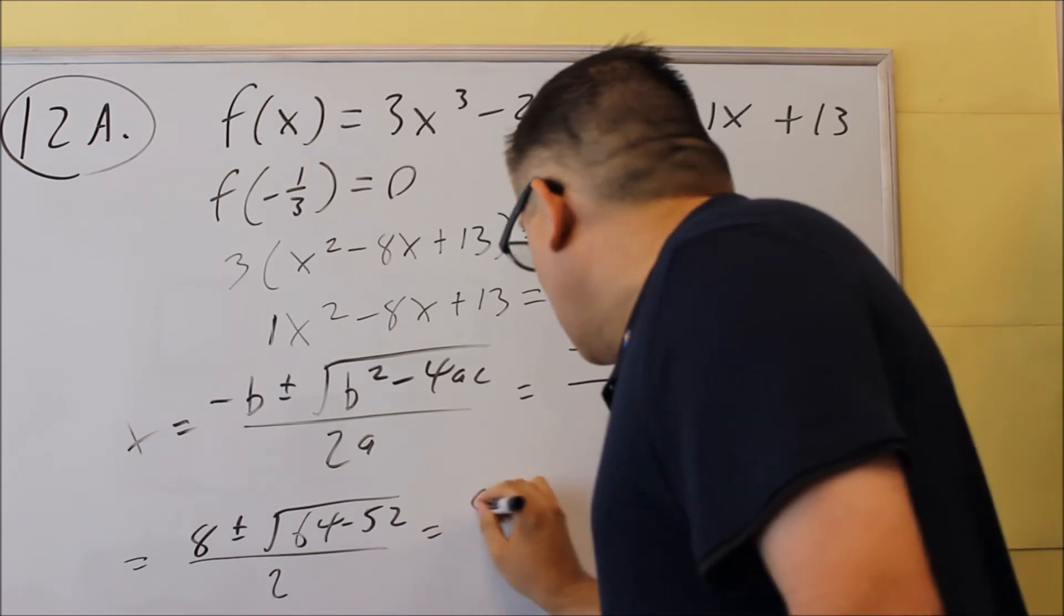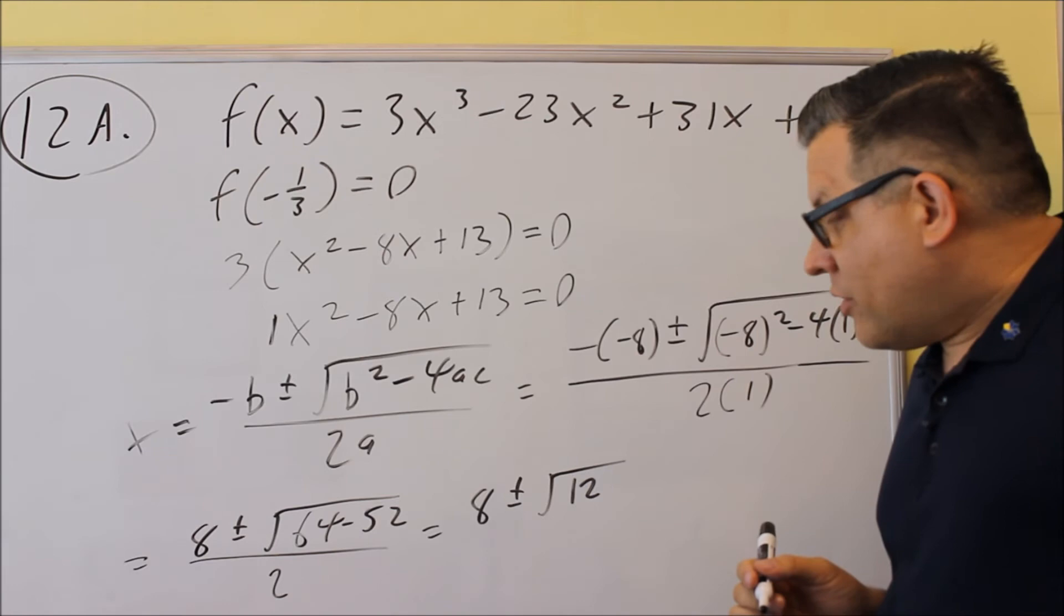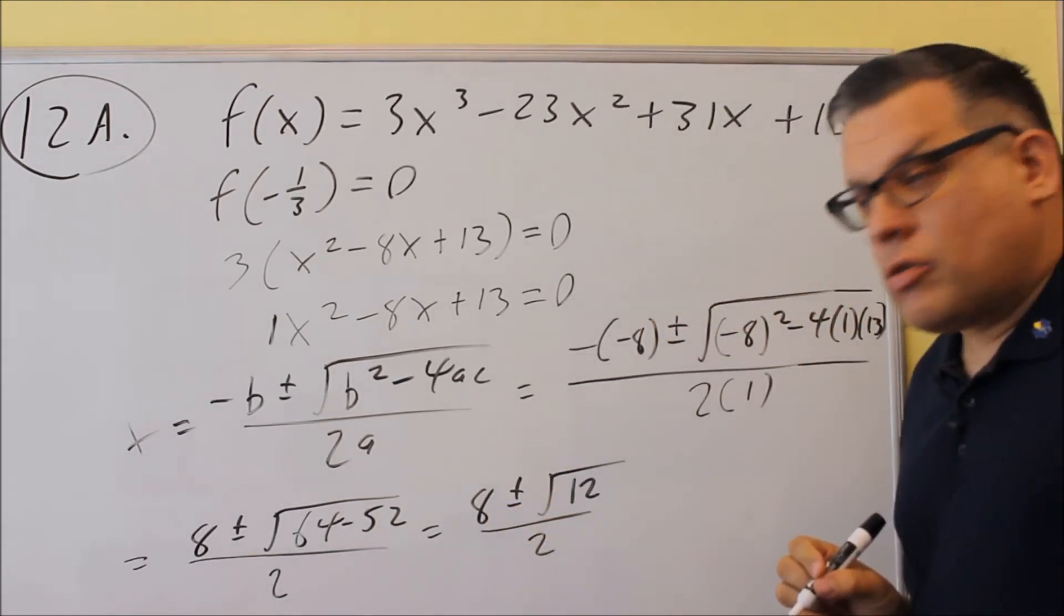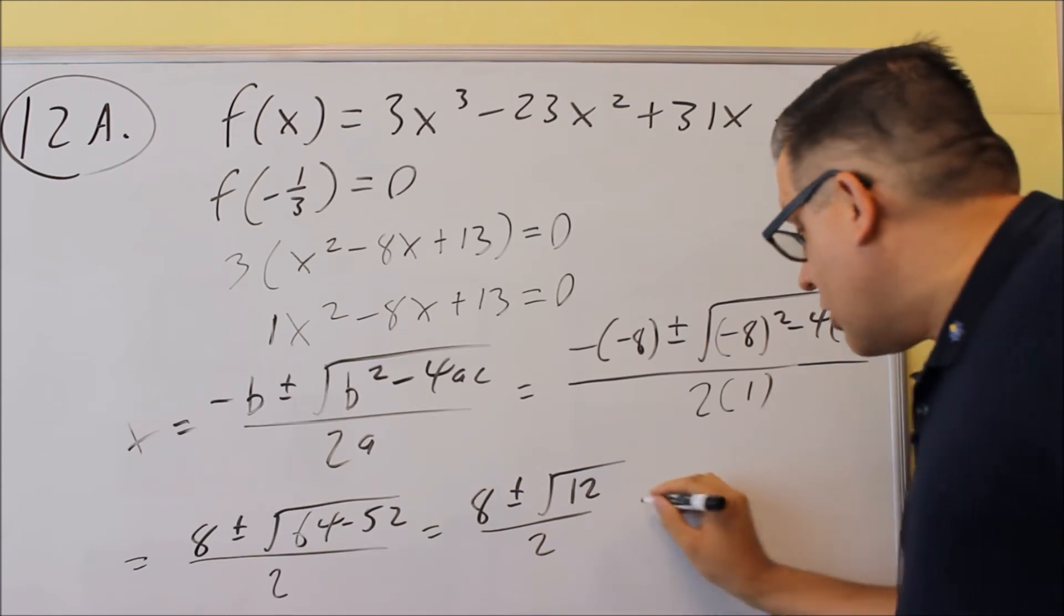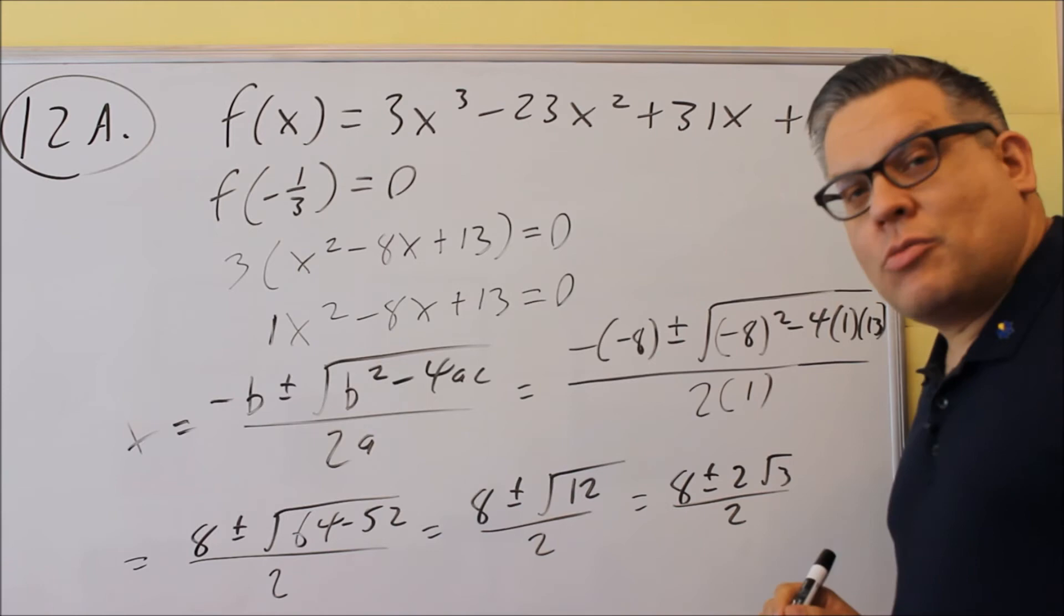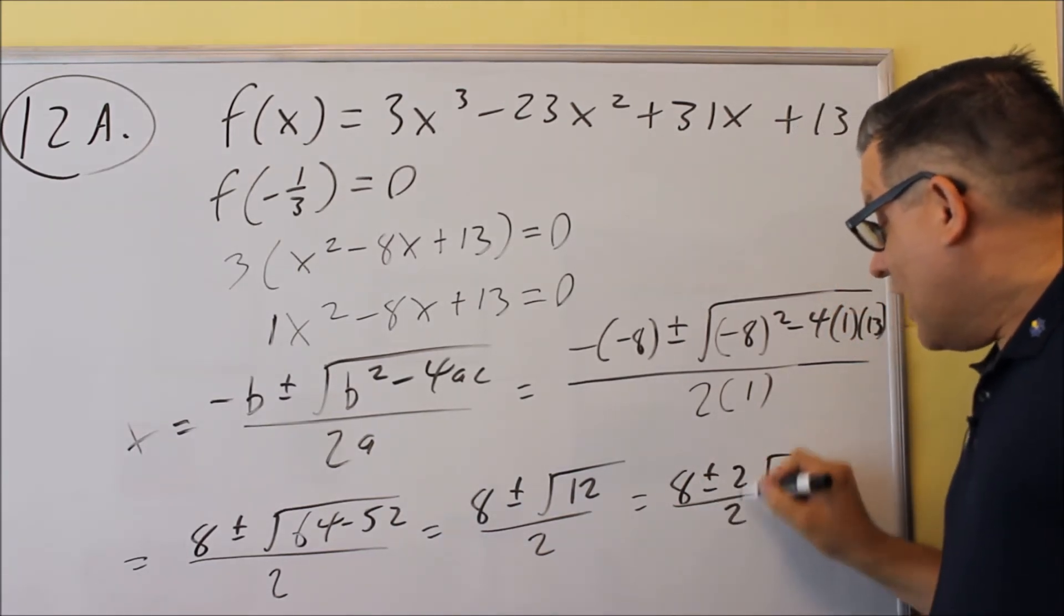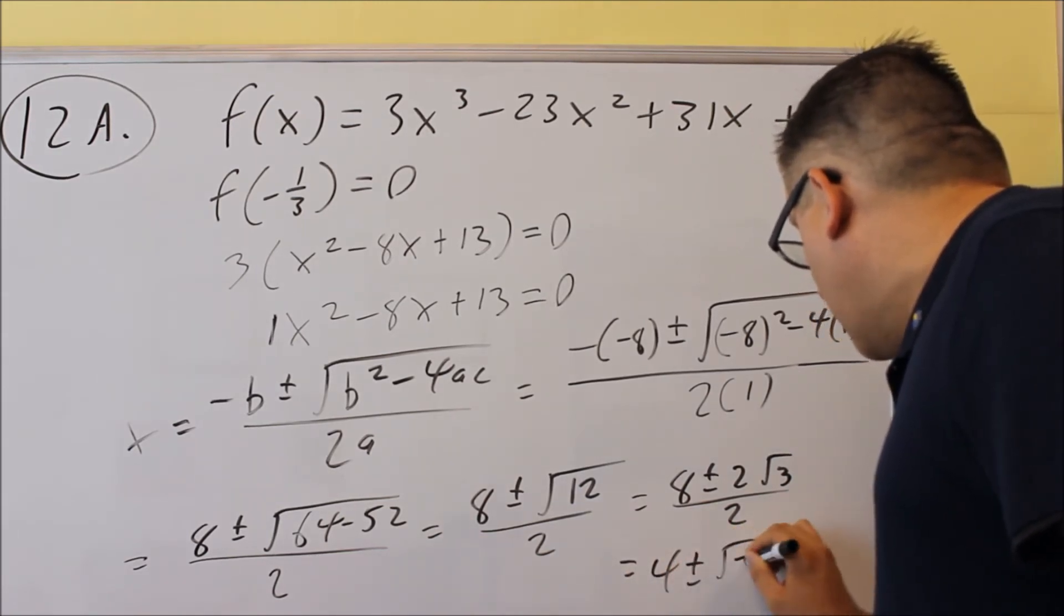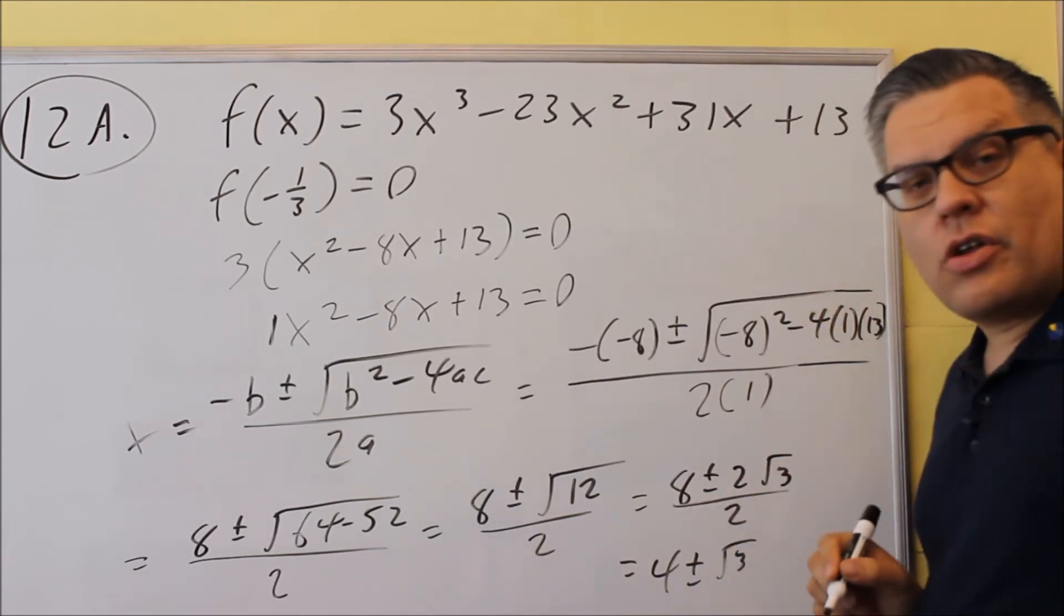You want to subtract this, you get 8 plus or minus the square root, you'll get 12 inside there when you subtract that one. Now this, you want the square root of 12, you want to break that down one more time. 12 can be written as 4 times 3, square root of 4 is 2, we can take the 2 outside the radical, so we get 2 square root of 3, and that's going to be over 2. But we can do one more step on this one. We can divide each of these by 2, and then our final answer will be 4 plus or minus the square root of 3, and that's as far down as we can go. So this will be considered zeros.